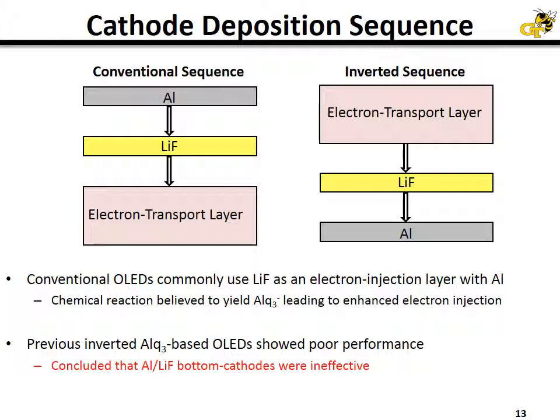What's believed to happen is that the hot aluminum being evaporated onto the lithium fluoride layer causes a chemical reaction that surface dopes the electron transport layer and enhances electron injection.